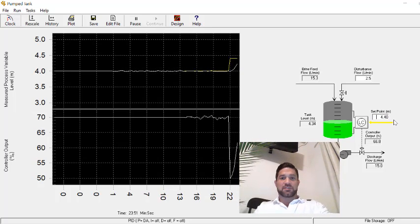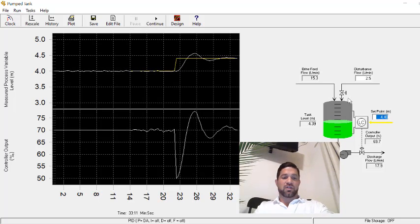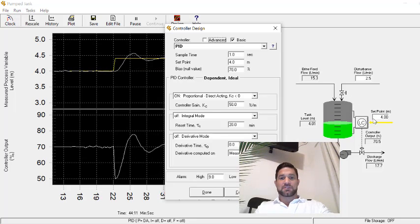And let's do a step change to 4.4. We can see no sustained oscillations. Let's step back down to 4. So what this means now is that I need to increase the gain. Let's try 100.